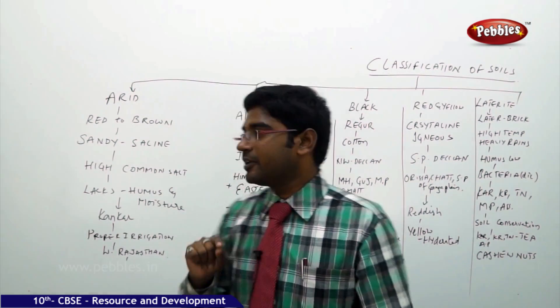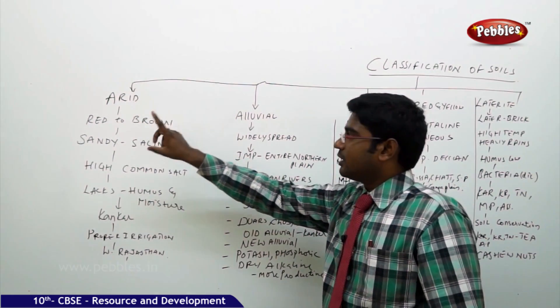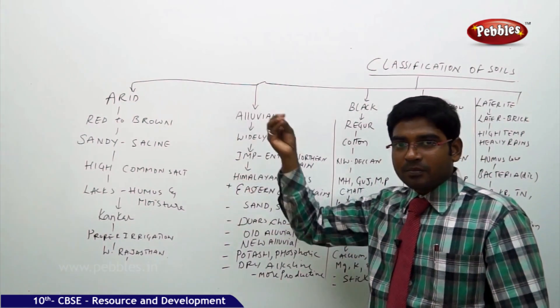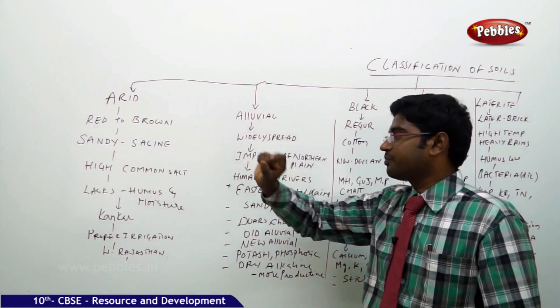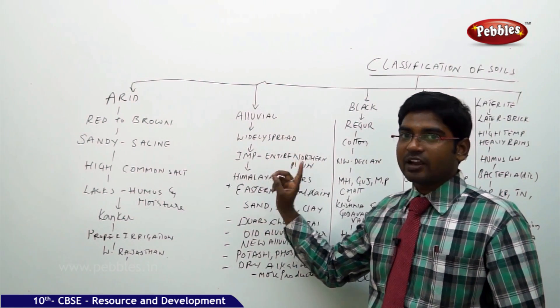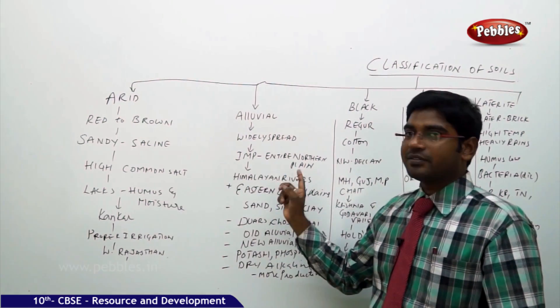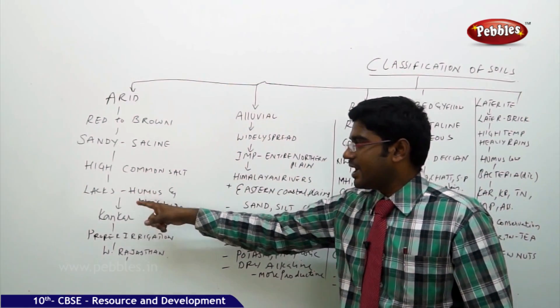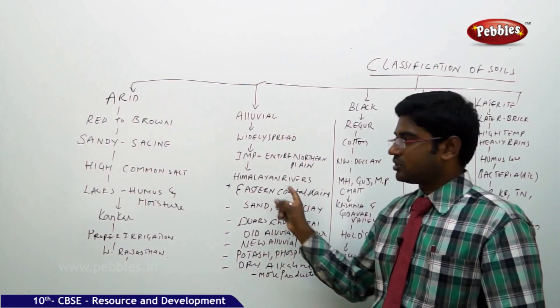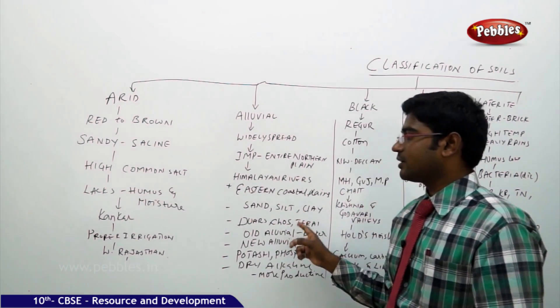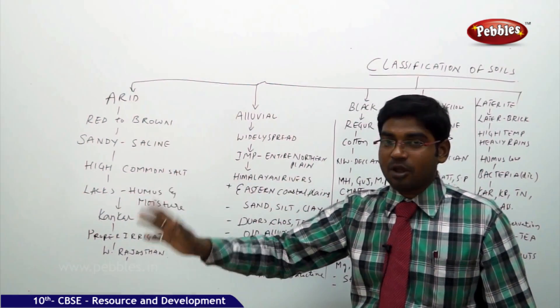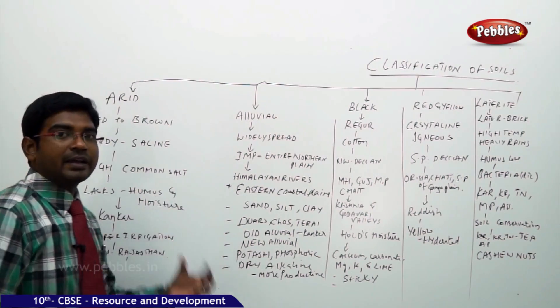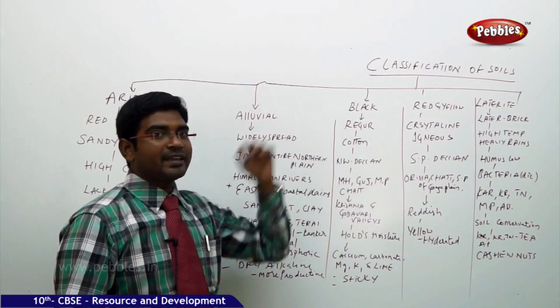Let us go a quick recap here. Arid soils are red to brown. Alluvial soils are not completely red, not completely brown, in the middle texture. Sandy and saline, they are extended in the entire northern plain. High common salts versus no common salts. They are not brought by any rivers versus they are brought by Himalayan rivers. They lack humus and moisture versus they do not lack the humus and moisture. They have high content of canker. It can be used for irrigation with proper methods. It can be used because they naturally have all the important chemicals which are used for agriculture and cultivation.